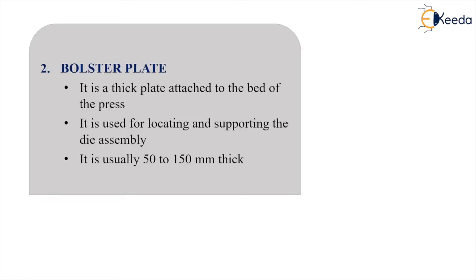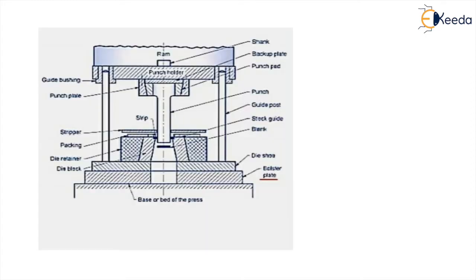The bolster plate is a thick plate attached to the bed. It is used for locating and supporting the die assembly. The bolster plate has a thickness of 50 mm to 150 mm and is used to support the die.